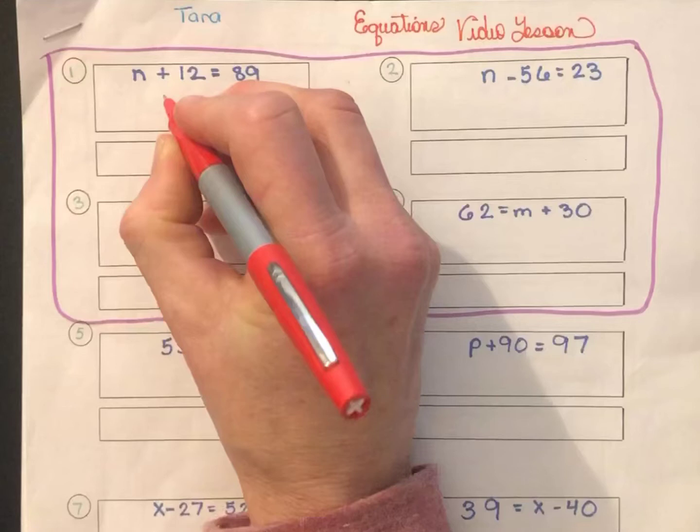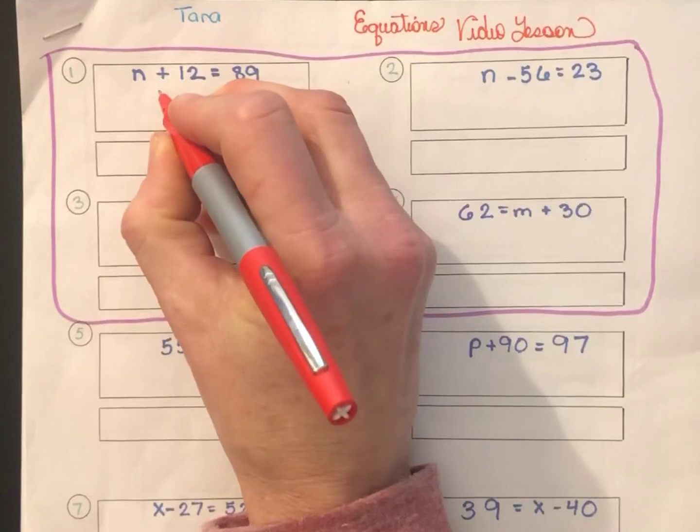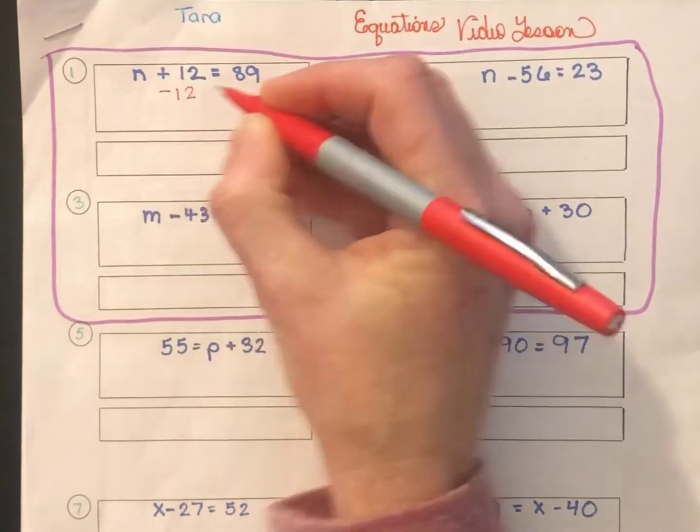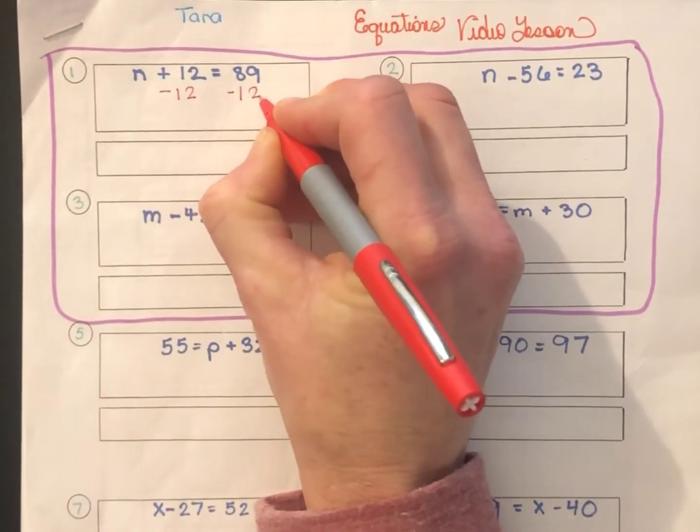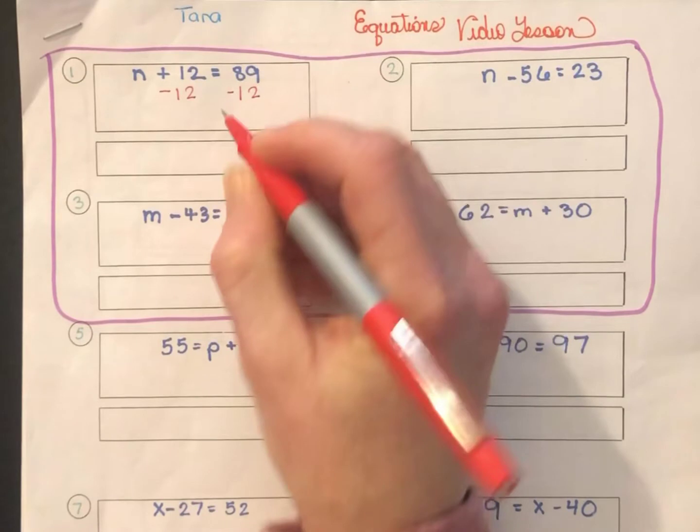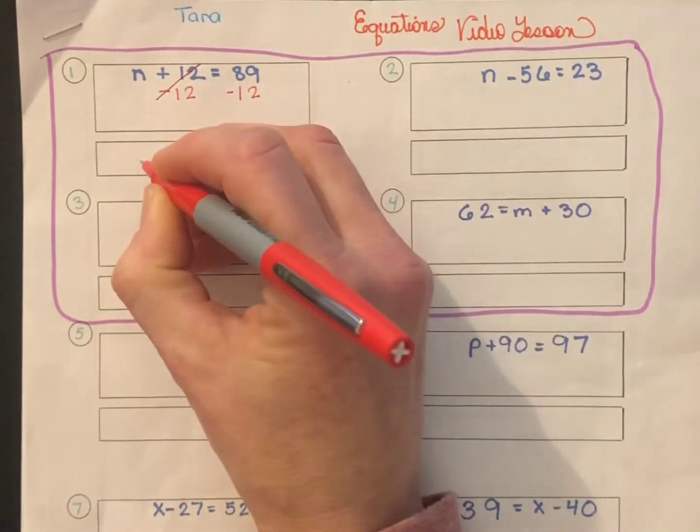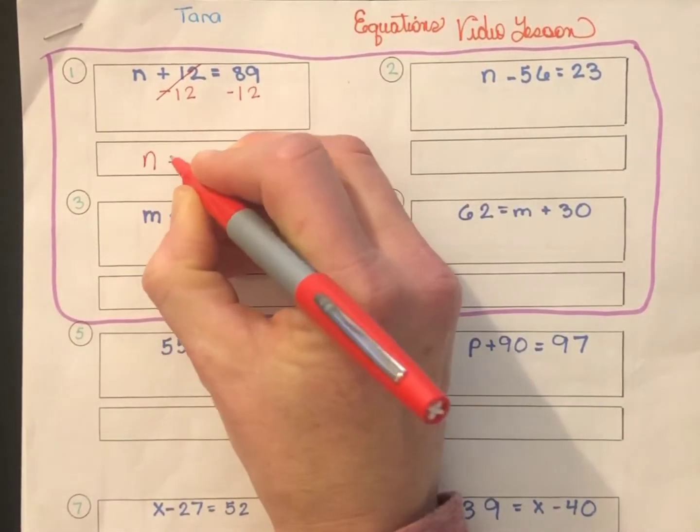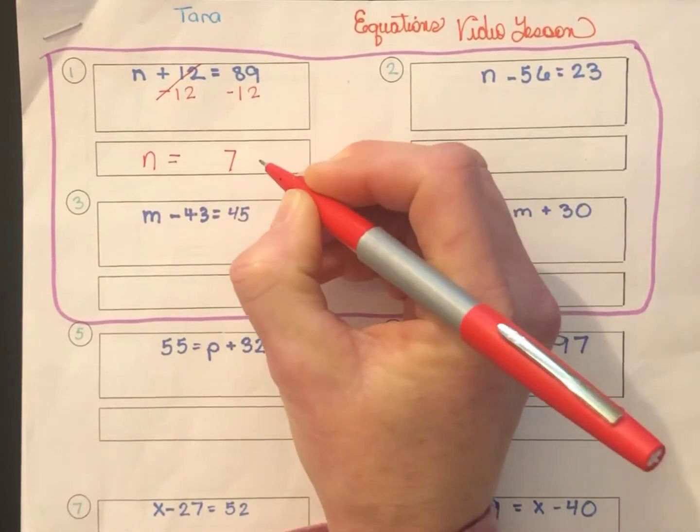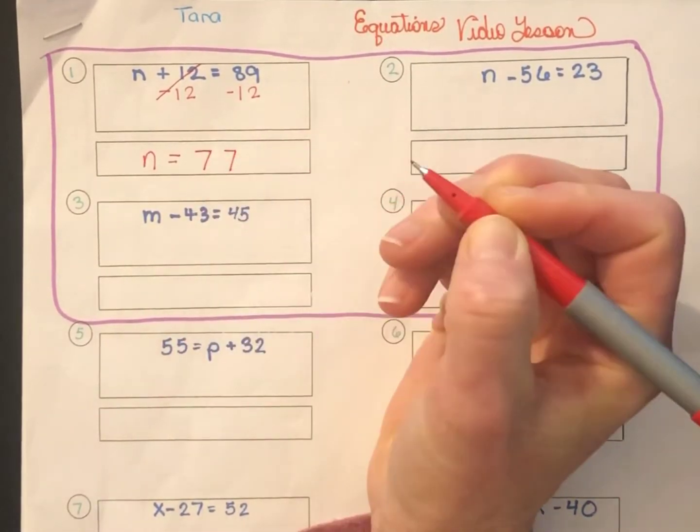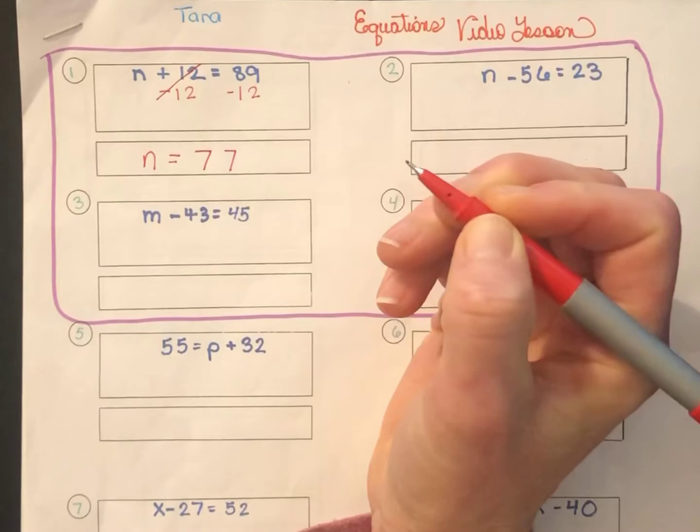The opposite of positive 12 is negative 12. So I will subtract 12, but remember this is algebra. We've got to keep both sides balanced. So we'll take away 12 from both sides. When we do that, it cancels out the 12 and leaves us with n on the first side. And then 89 minus 12 gives us 77 on the other side. Therefore, we have our answer, n equals 77.